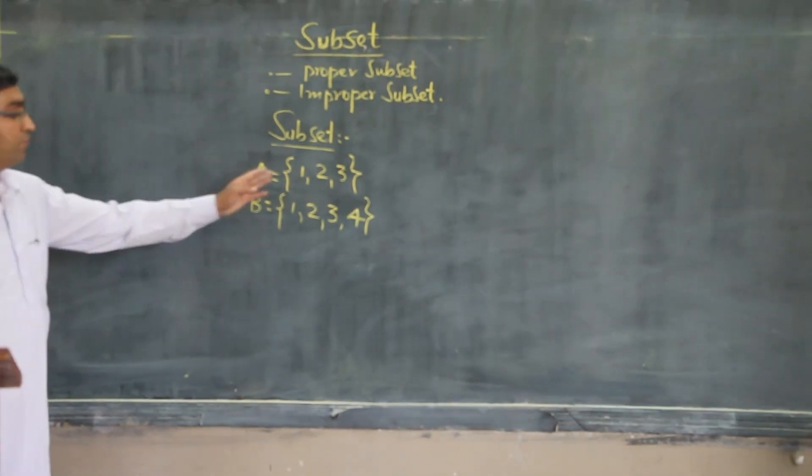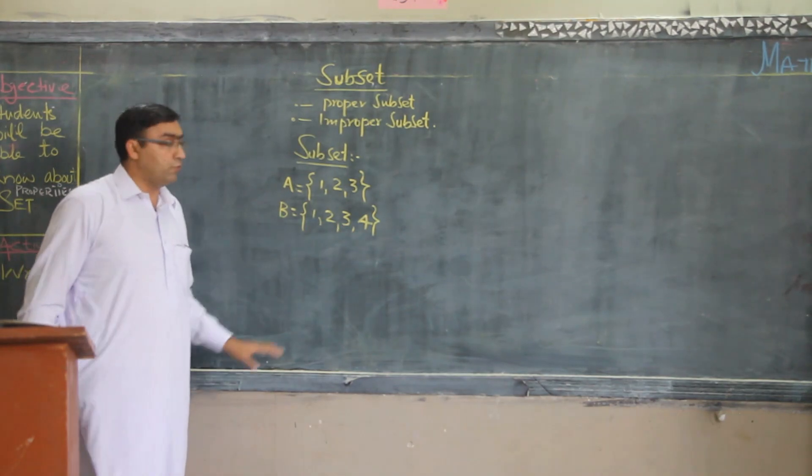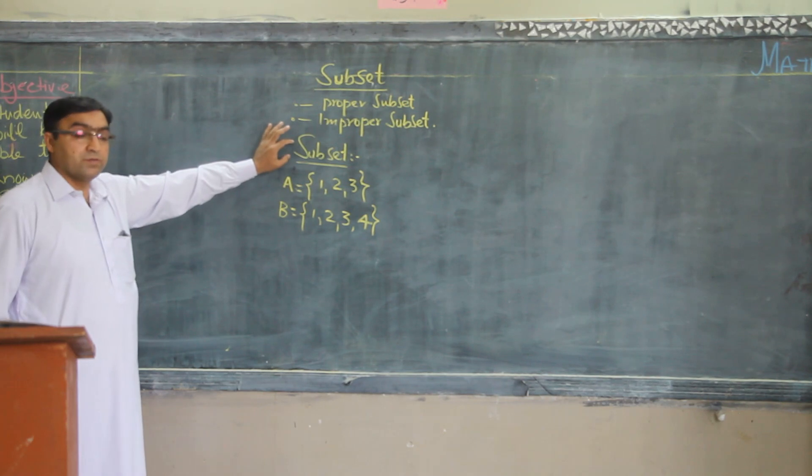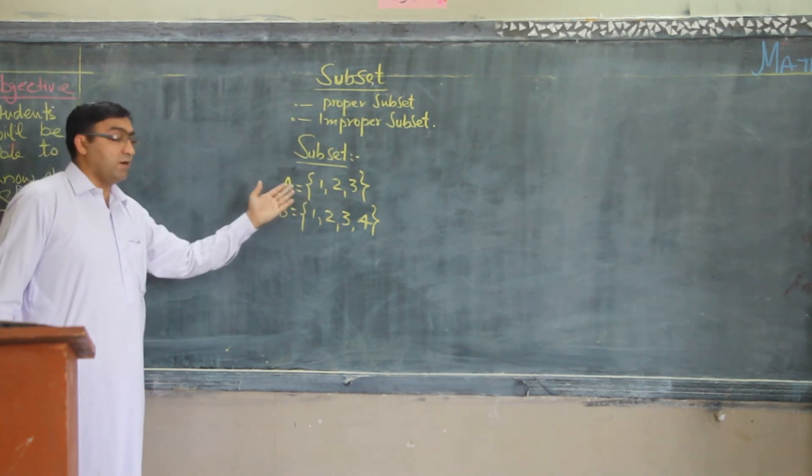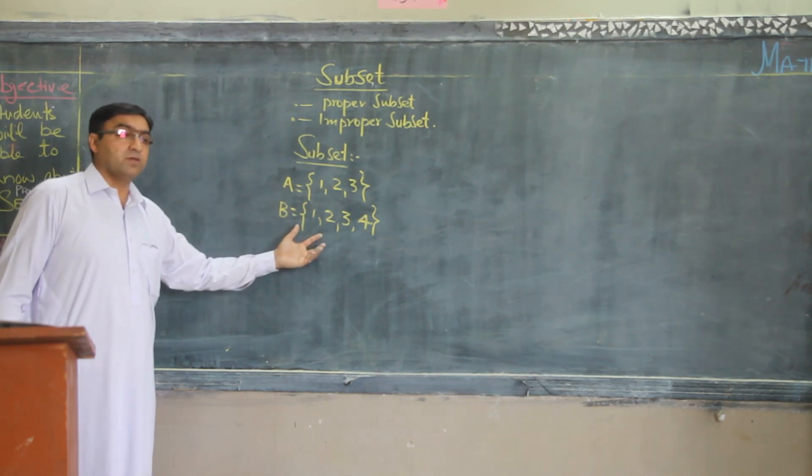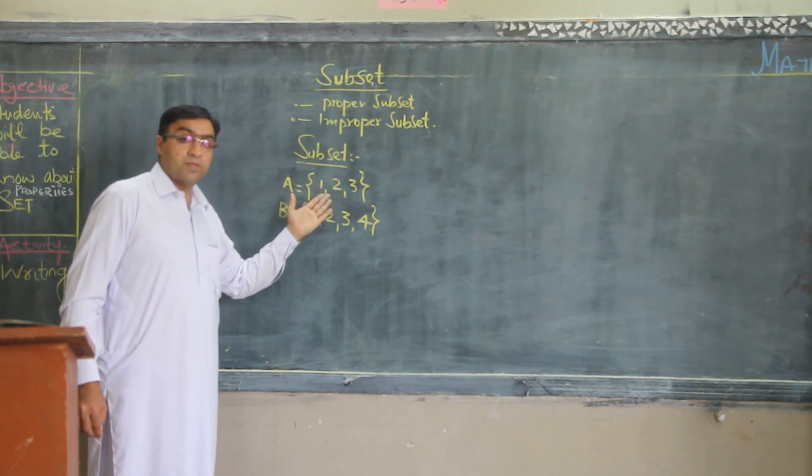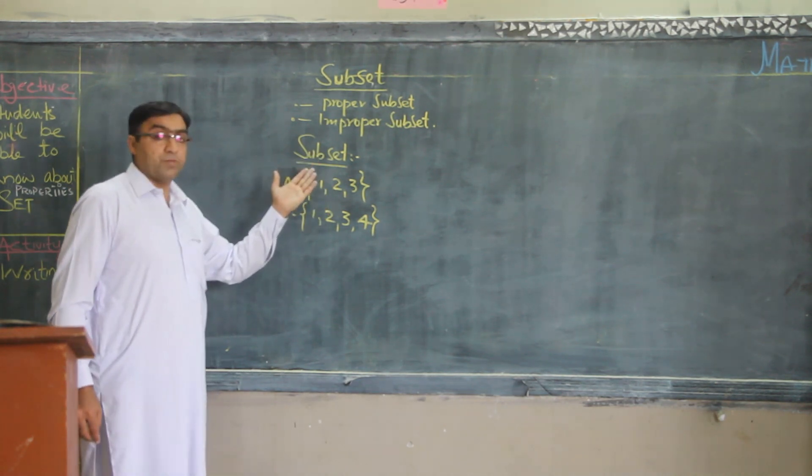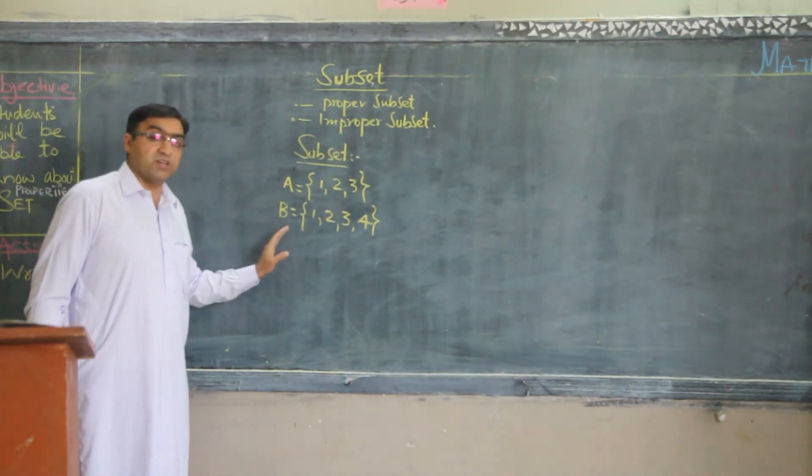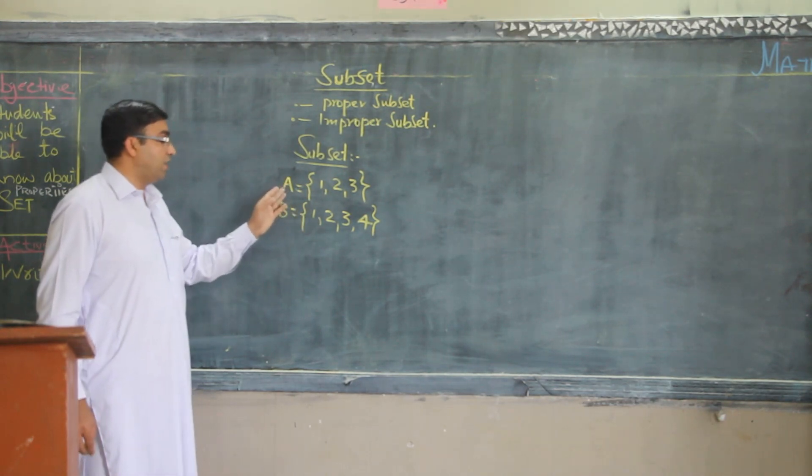If A have 1, 2, 3 and B is equal to 1, 2, 3, 4, we have to discuss the subset. Try to understand what is subset. Here, you are seeing that all the elements of set A exist in set B, but all the elements of set B doesn't exist in set A. So, if all the elements of set A exist in set B, A is called subset of B. Try to clear it.